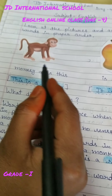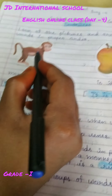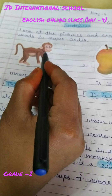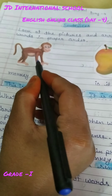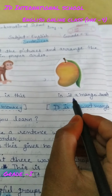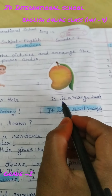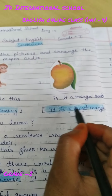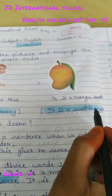Now we can understand that — this is a monkey, bandar hai. And when we arrange the second group, it becomes: 'It is a sweet mango.'